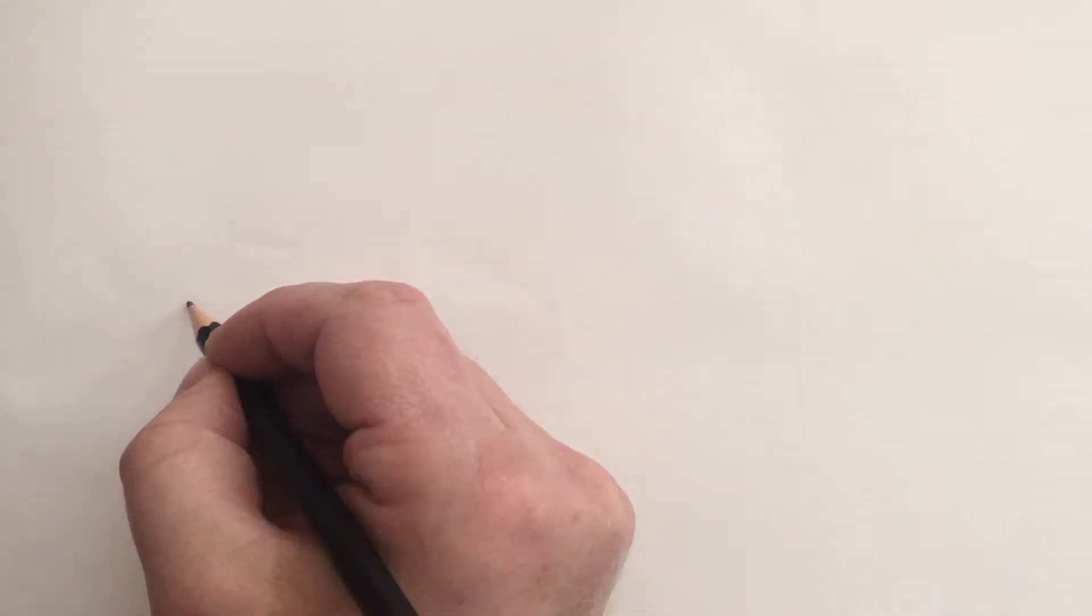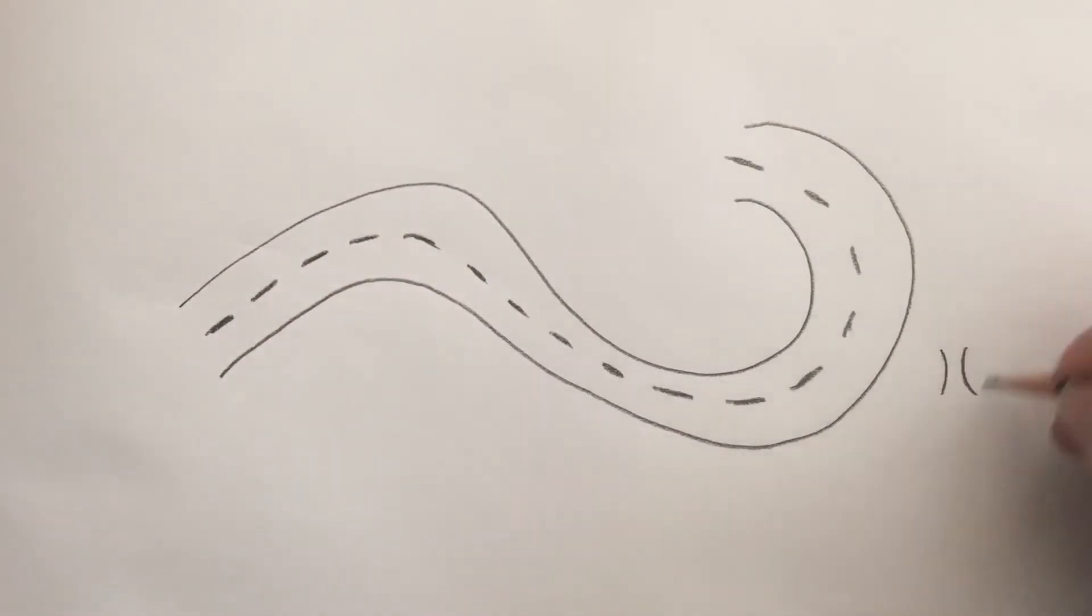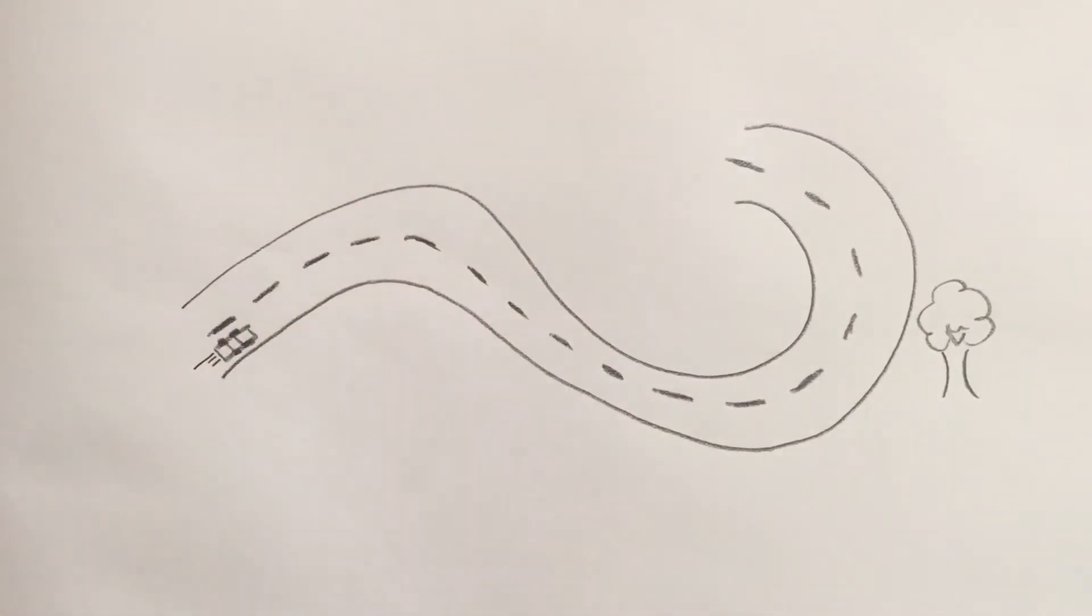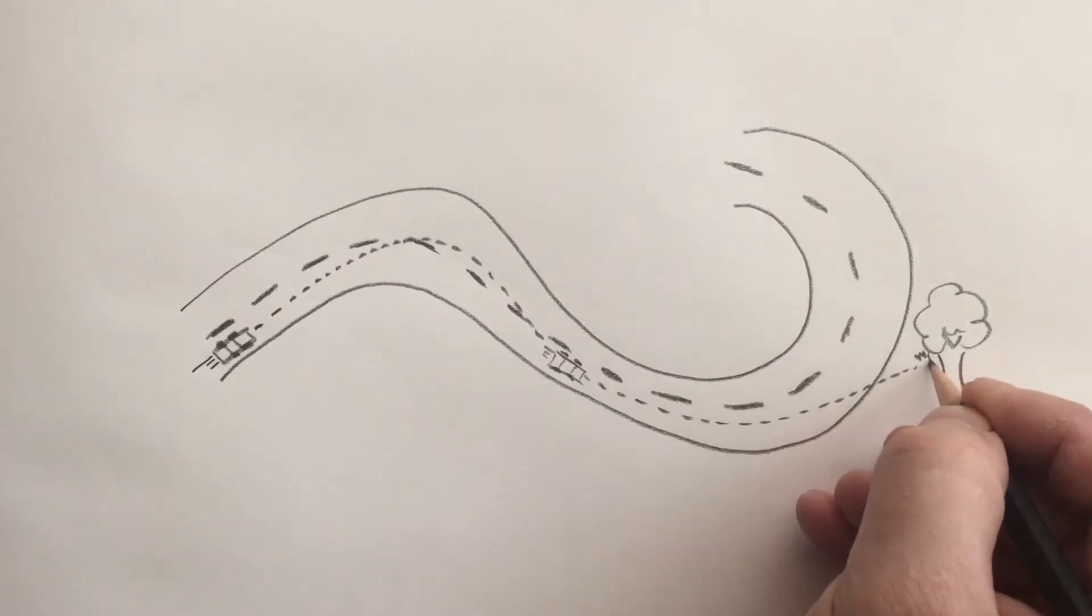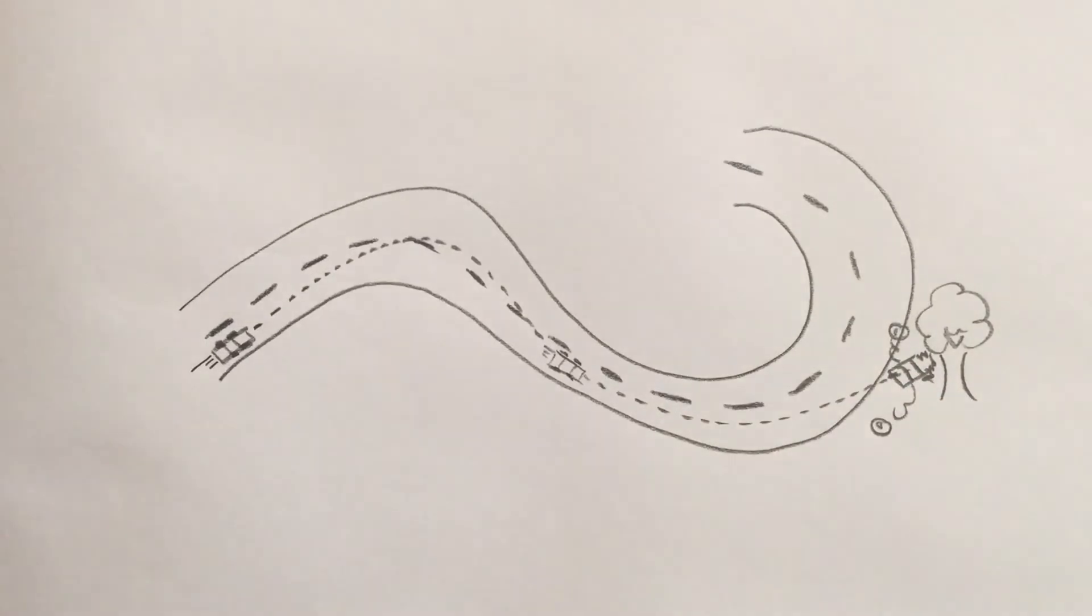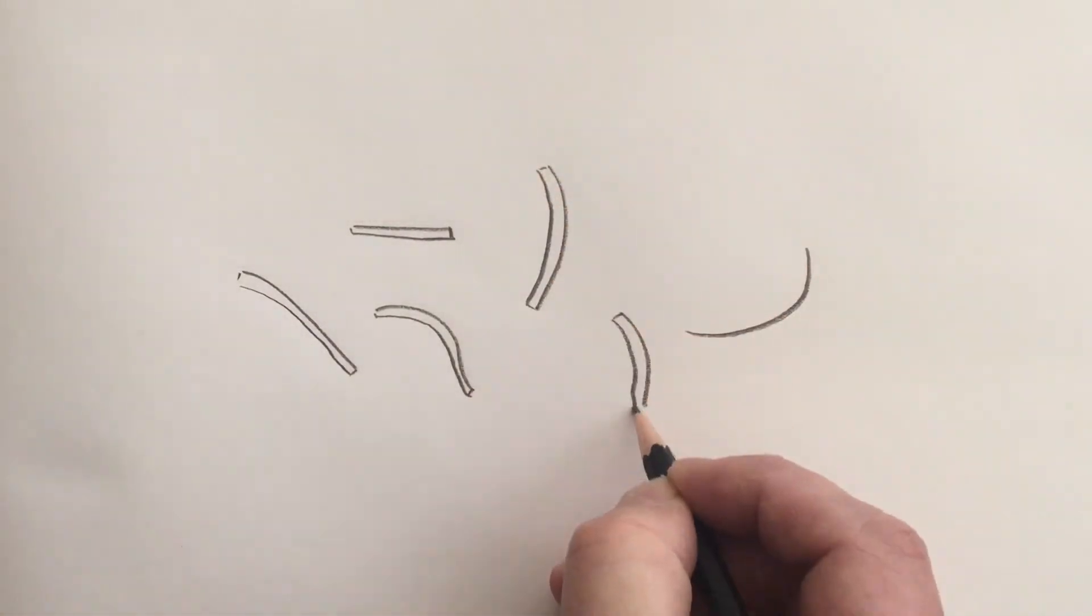To understand why, imagine for a moment a car speeding along a winding road. The car fits easily on the road, but if it's going too fast, it won't be able to navigate the bends. And you just know that at some point, it's going to crash.